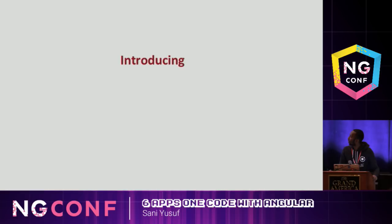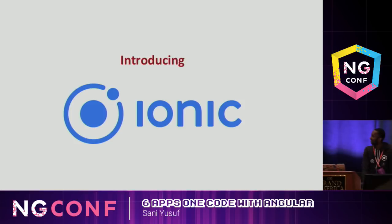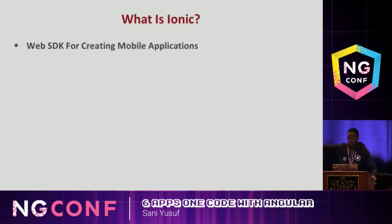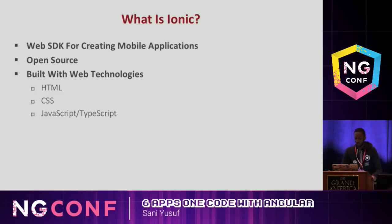So how do we achieve a uniform mobile experience? Ionic comes into play. What is Ionic? It is a web SDK for creating mobile applications. It's open source - completely free. It's built with web technology: HTML, CSS, JavaScript, and TypeScript, because we want to be good JavaScript. It supports Android, iOS, and Windows Universal as first-class citizens - the key word being Windows Universal, because Microsoft makes us believe Windows Phone is no more, it's just one experience everywhere.